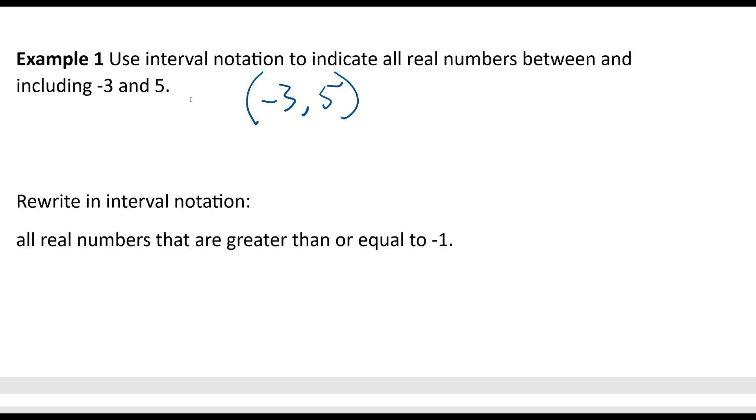I do feel like I need to say this. In set-builder, that would be x such that negative 3 is less than x less than 5. So it didn't say including 3 and 5, or negative 3 and 5. Oh, it did say including. Oh, totally missed that. Between and including.